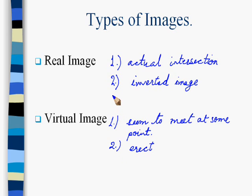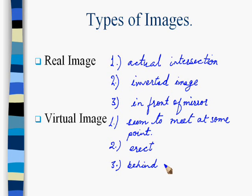The real images, in the case of mirrors, are formed in front of the mirror. Virtual images are formed behind the mirror. You can easily understand that the image you have seen in the looking mirror is a virtual type of image.